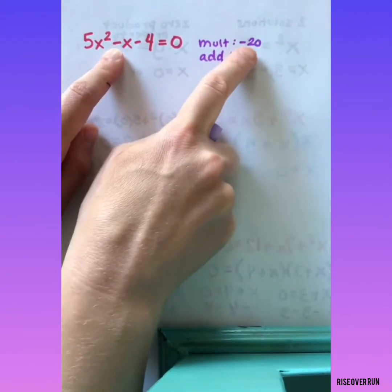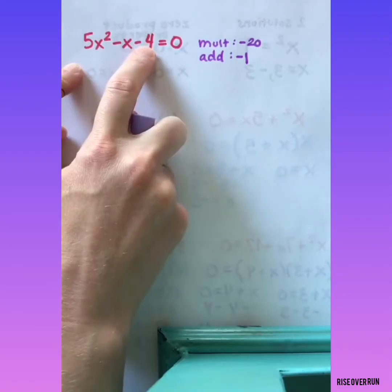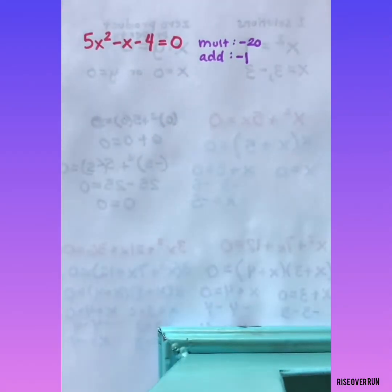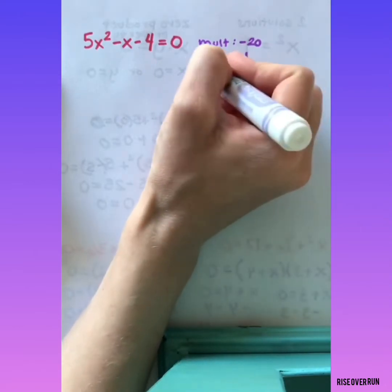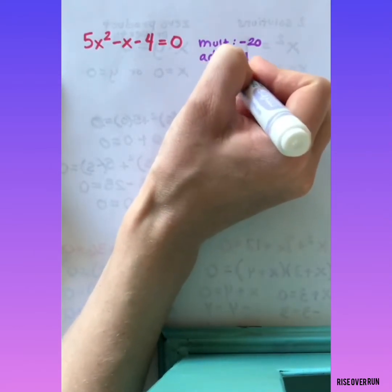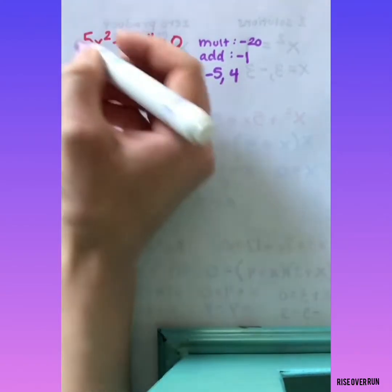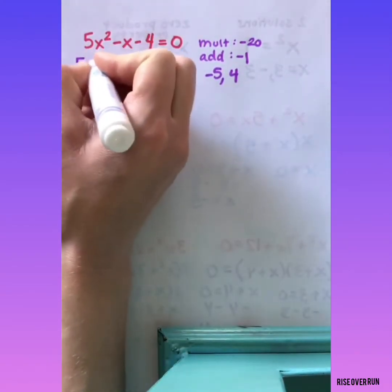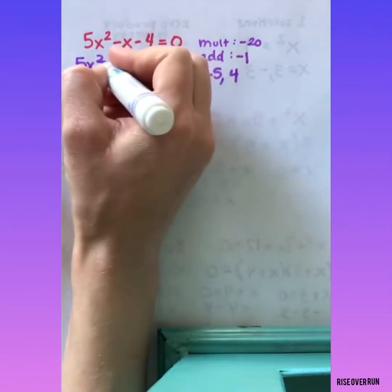Remember, we get this negative 20 by multiplying a times c. That's the first coefficient times the constant. So two numbers that multiply to give me negative 20 and add to give me negative 1 are negative 5 and 4. So I'm going to rewrite this so I can factor by grouping. This middle term, I'm going to split up using these numbers.